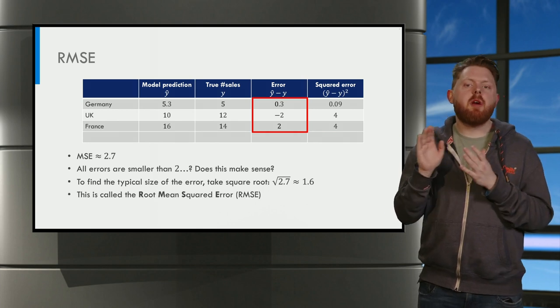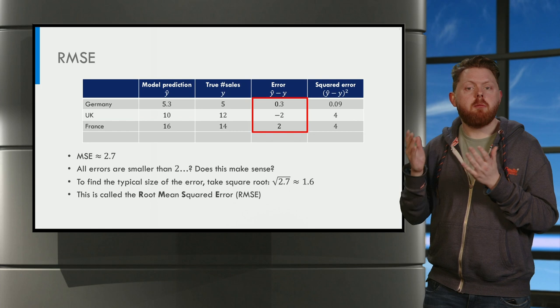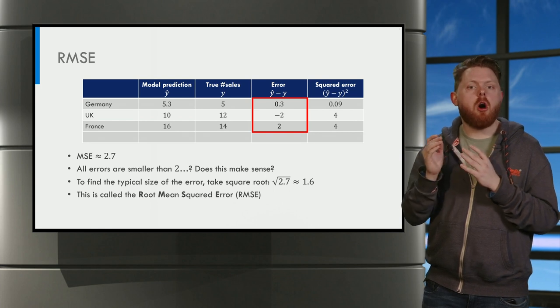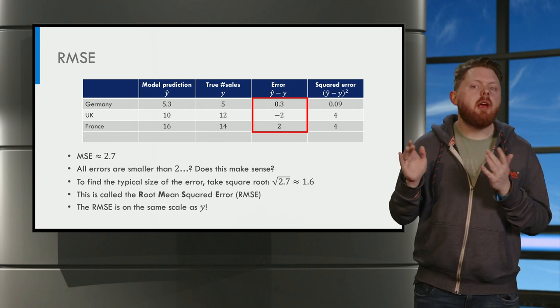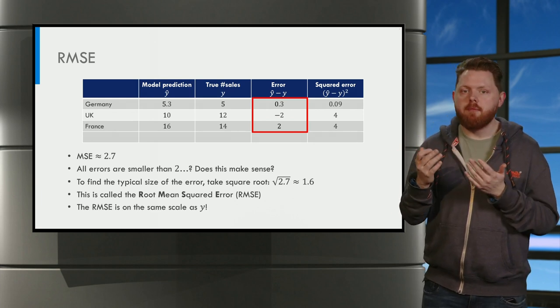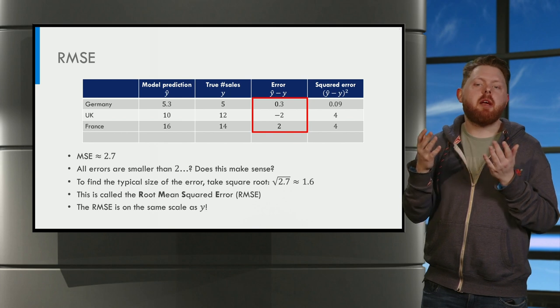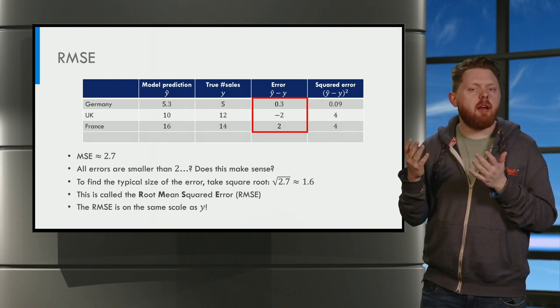This evaluation measure is called the root mean squared error, or RMSE. The RMSE is on the same scale as Y, so it can give you a better indication of the typical size of your error.